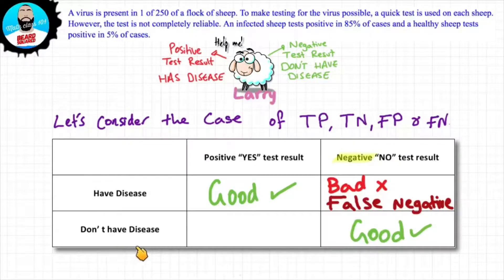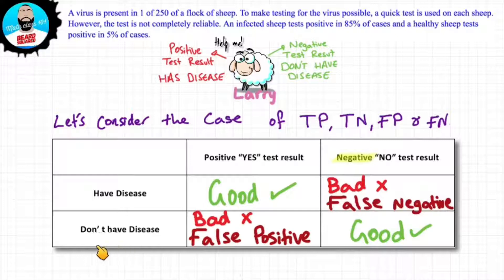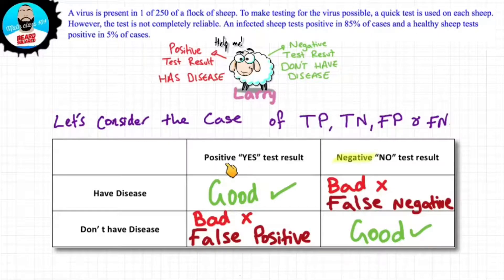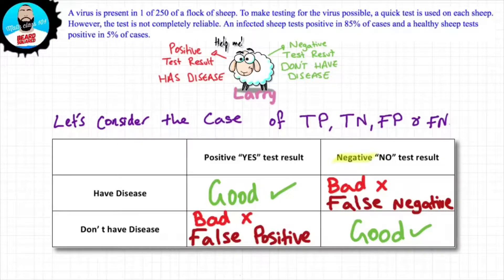Now if Larry doesn't have the disease and the test result is also negative, that's good — we know we don't need to take any further action. The final outcome: if Larry does not have the disease and tests positive, that's a bad result. We call that a false positive. And that's bad for Larry because the vet may now administer medication that may have its own side effects.